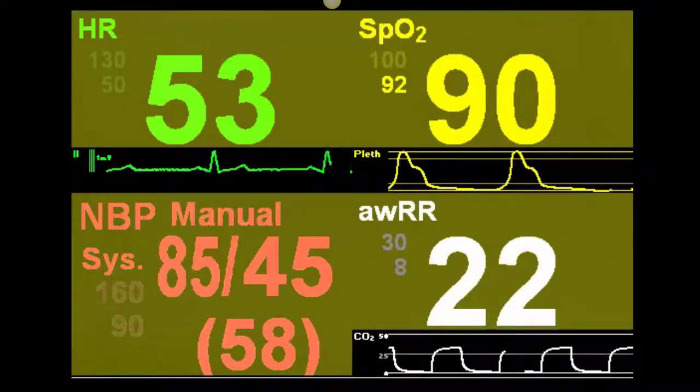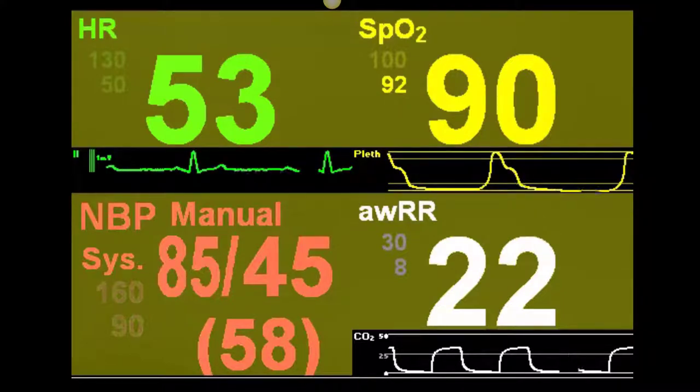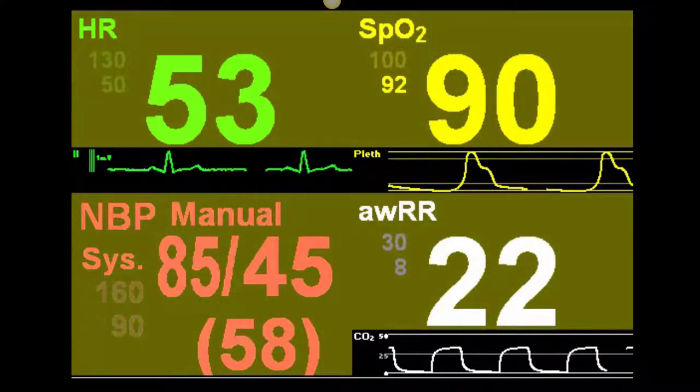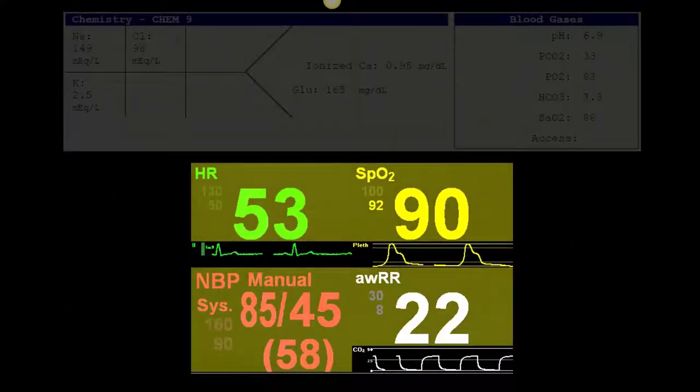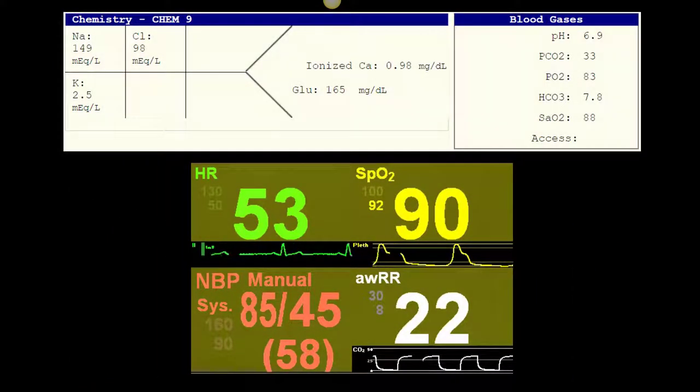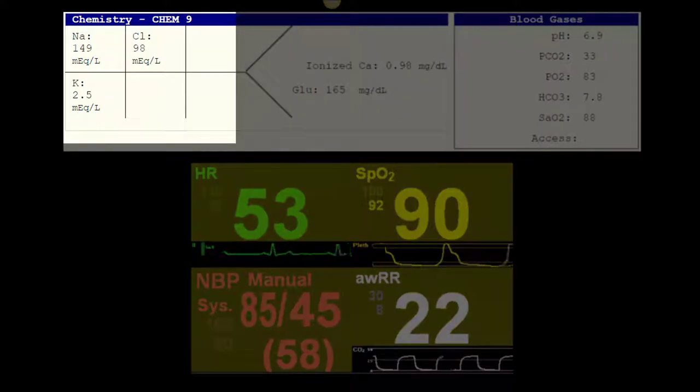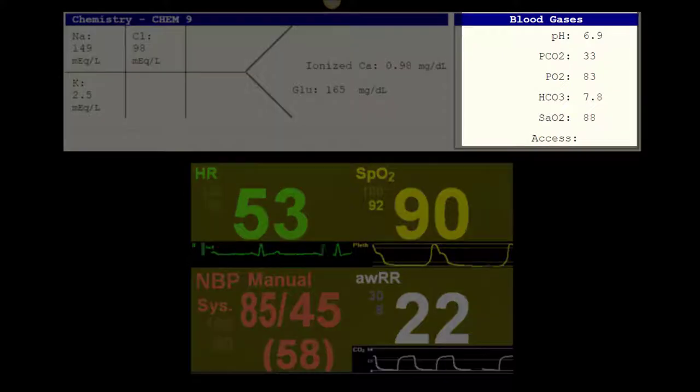The monitor shows a bradycardic hypotensive patient with what is interpreted as a first-degree AV block. Additionally, the few laboratory results that are immediately collected show some obvious electrolyte derangement and a profound metabolic acidosis.